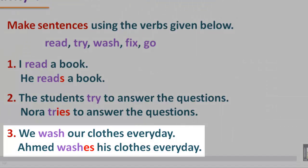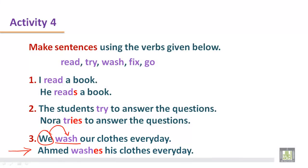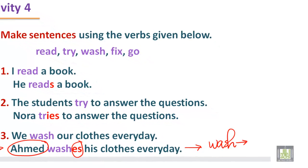Sentence number three: we wash our clothes every day. 'We' is a first person plural subject, so it doesn't require any verb with IES, ES, or S. It is simply the base form of the verb: wash. But in the next sentence, Ahmed washes his clothes every day. Ahmed is a third person singular subject, so the verb requires ES at the end. The base form is 'wash', but with Ahmed it becomes 'washes'. Ahmed washes his clothes every day.